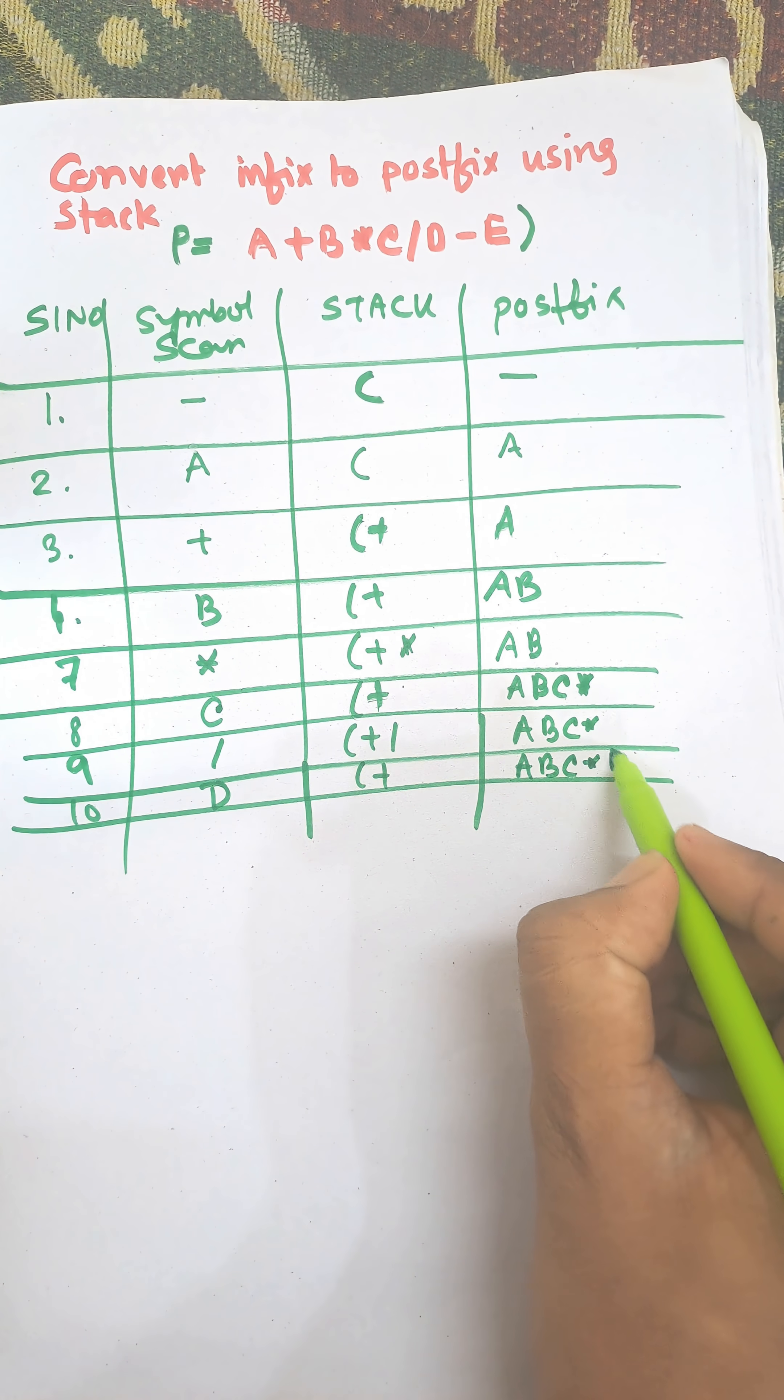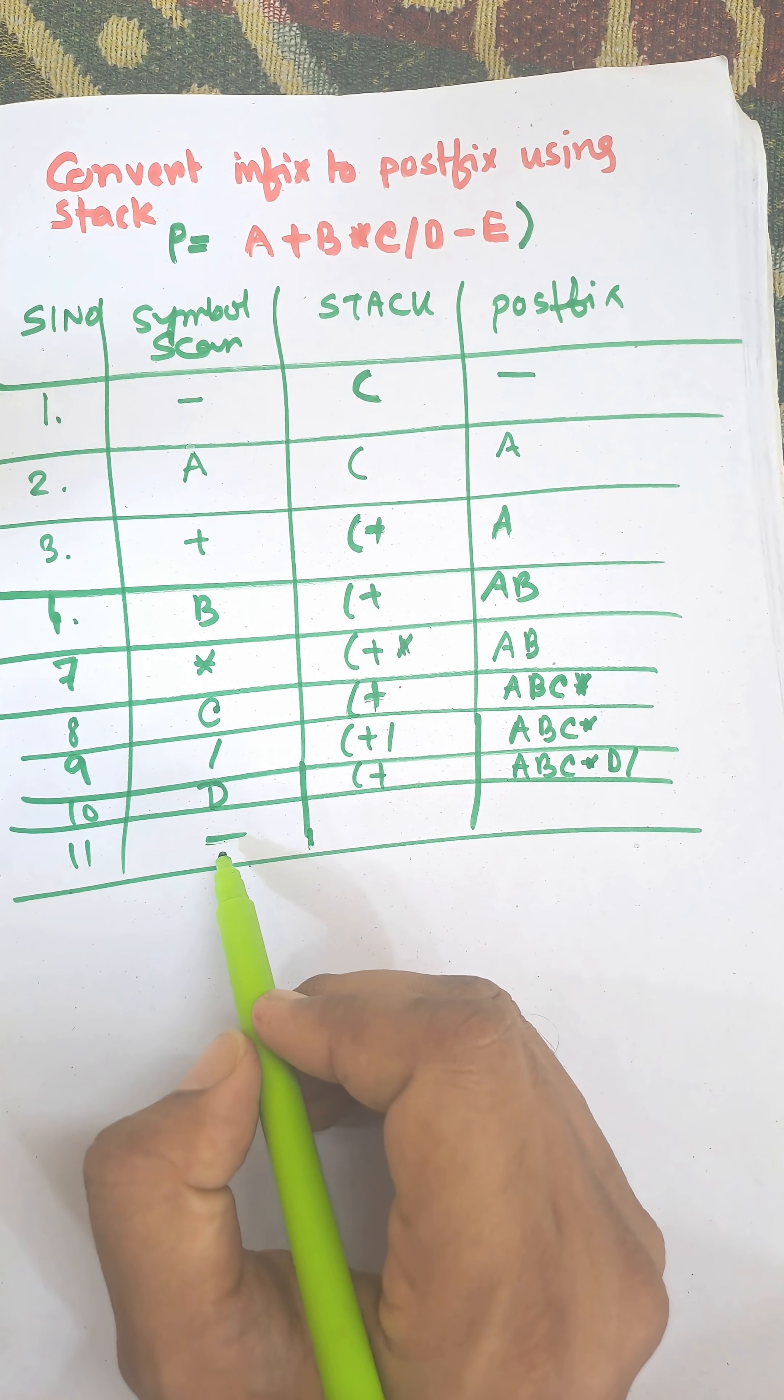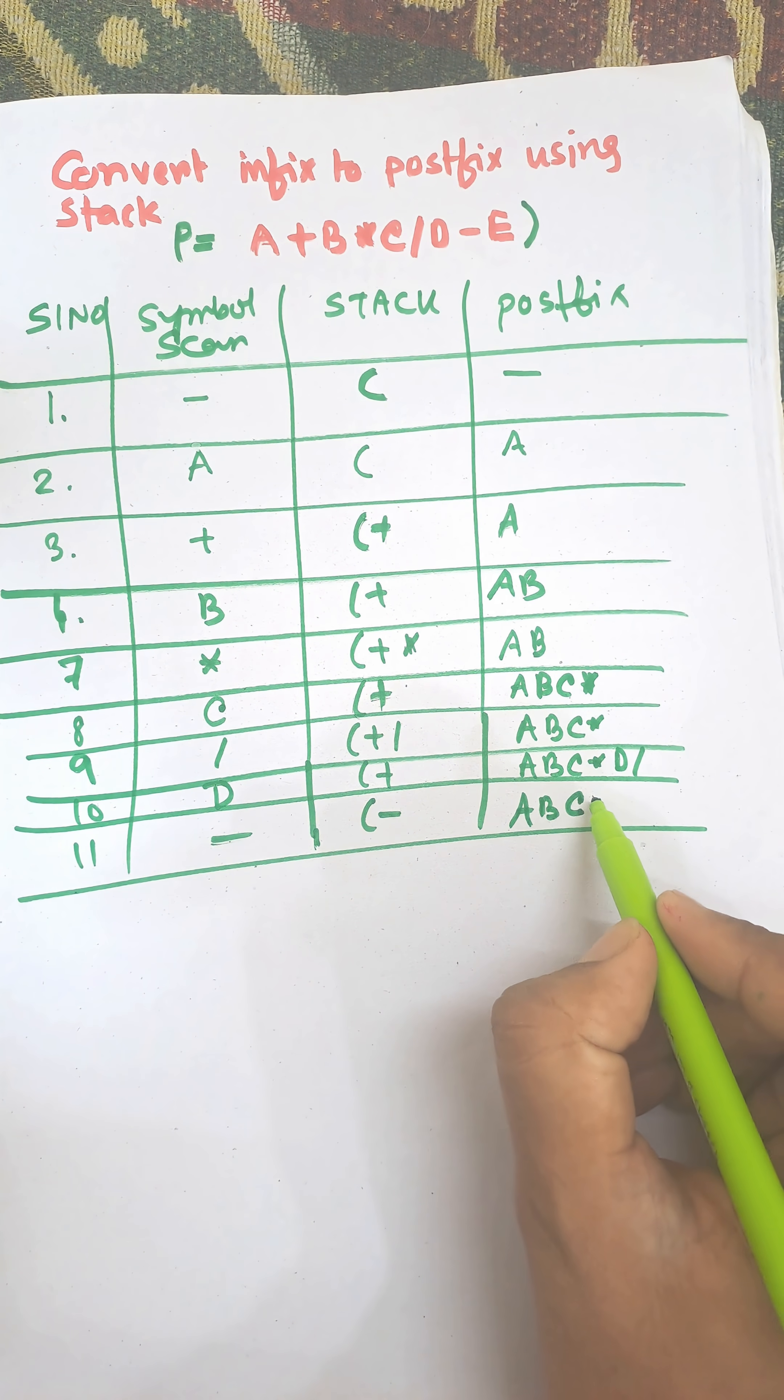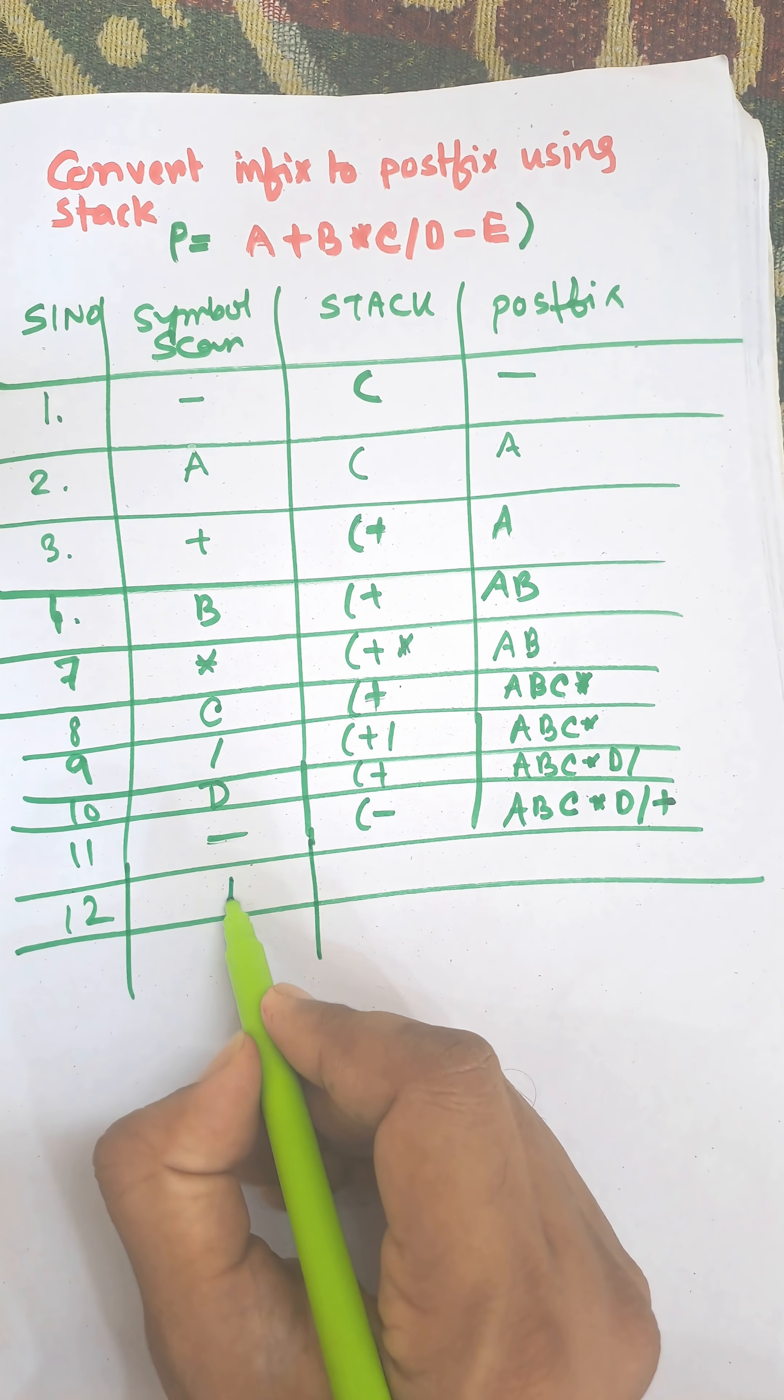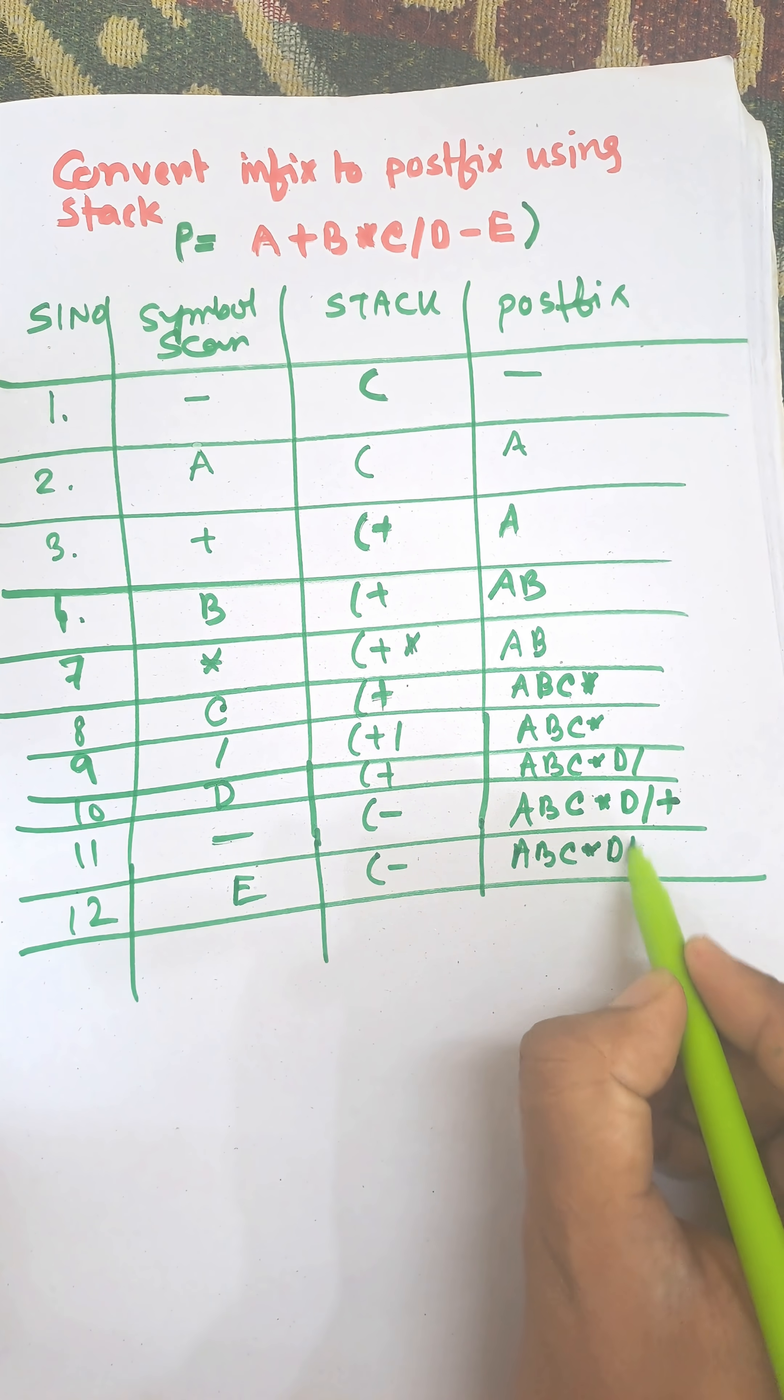Next one is minus. Plus and minus are the same priority, but plus arrived first so it will be popped from the stack: A B C star D division plus. Next is minus, then E, and E will be there: A B C star D division plus E.